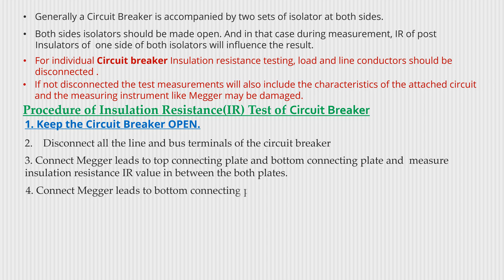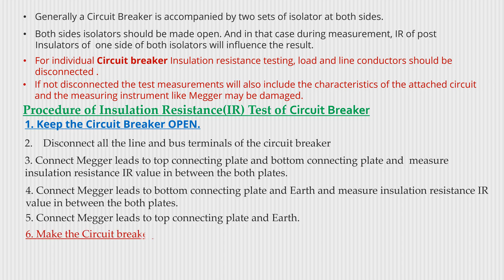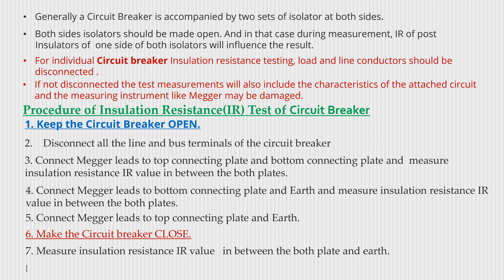Connect the megger leads to the top connecting plate and earth. Make the circuit breaker close. Measure the insulation resistance IR value in between both plates and earth. Note down the reading in the given proforma.